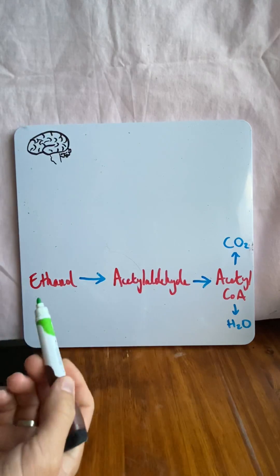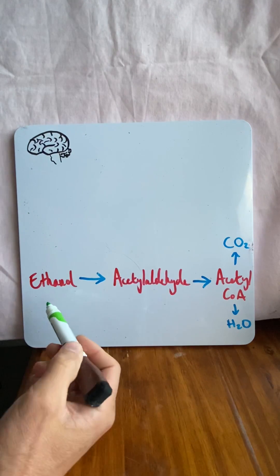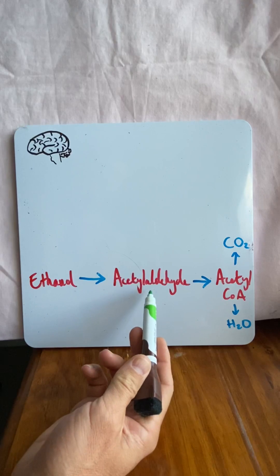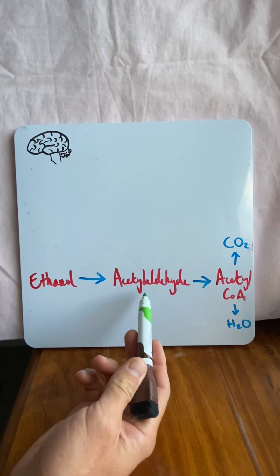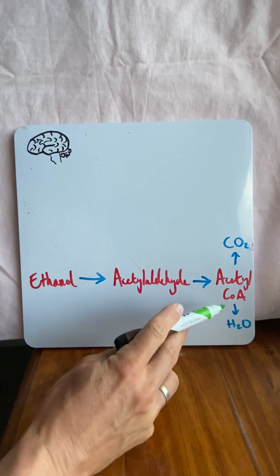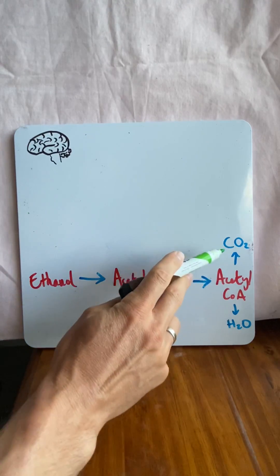So firstly, when you ingest alcohol or ethanol, hopefully ethanol, you turn the ethanol into acetyl aldehyde. Now this is happening in the liver. The acetyl aldehyde is turning into acetyl-CoA and ultimately the acetyl-CoA turns into water and carbon dioxide.